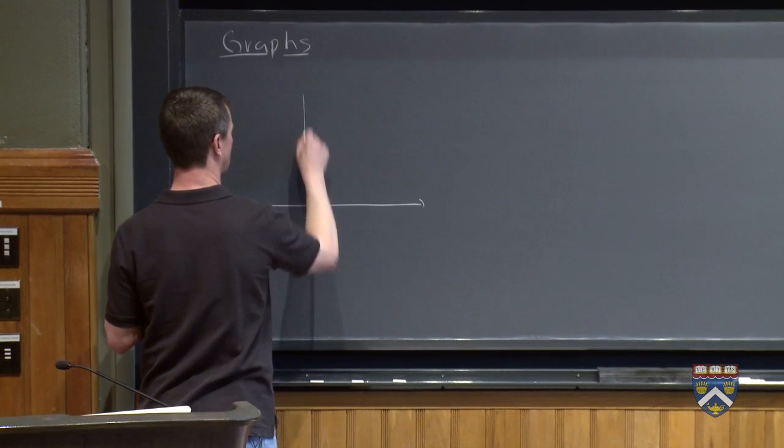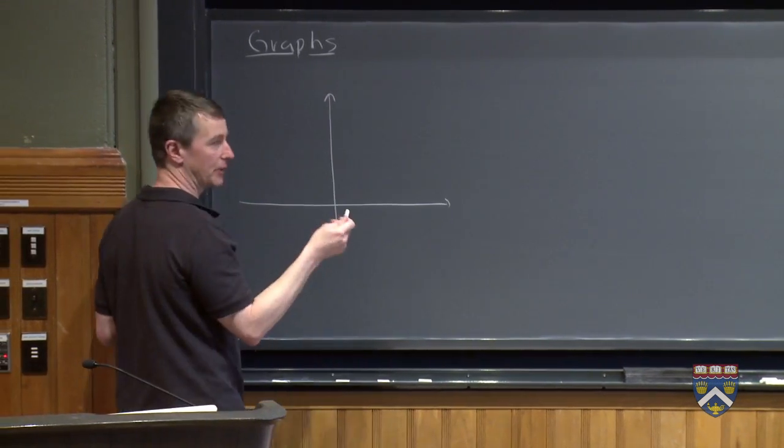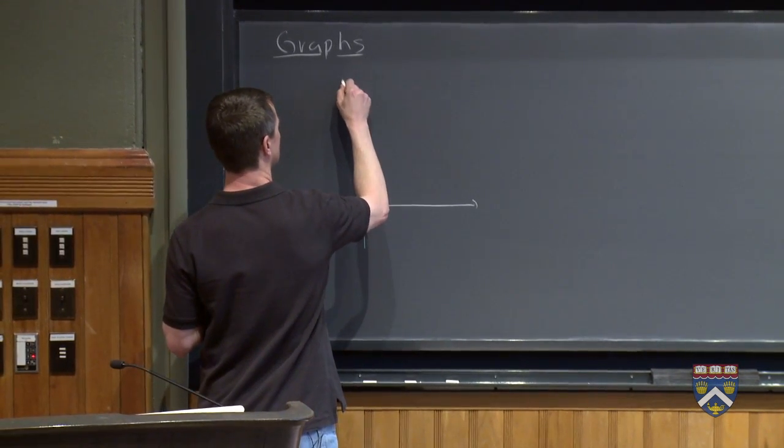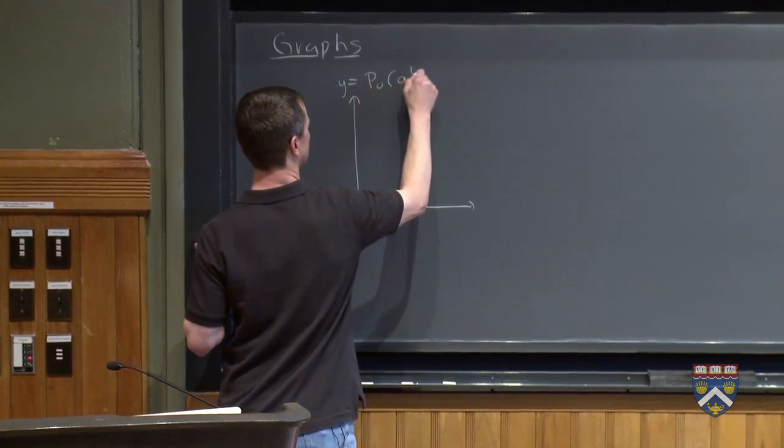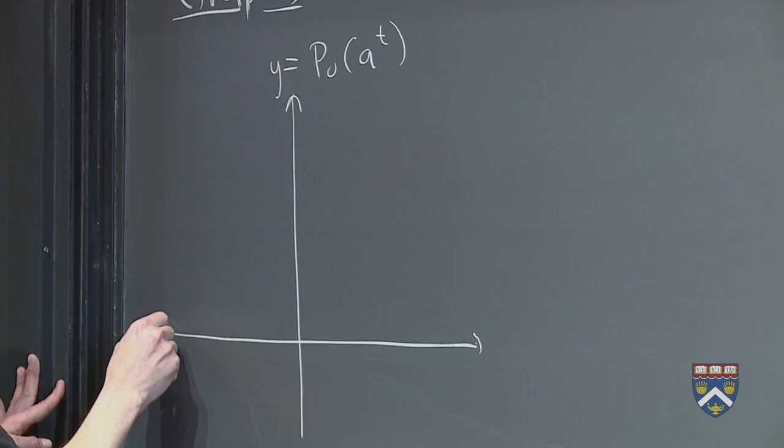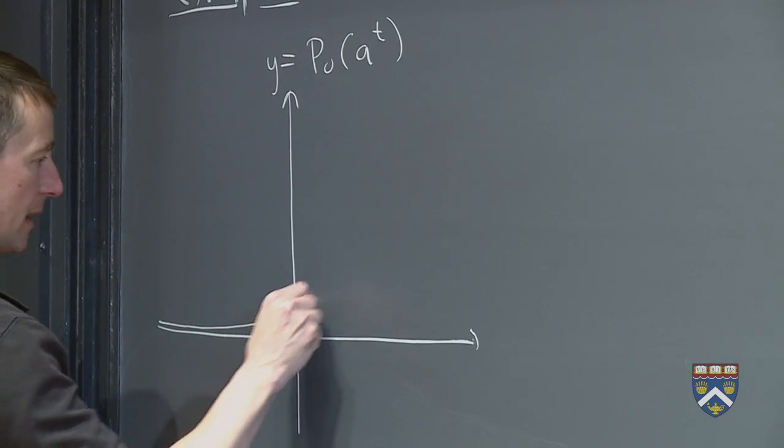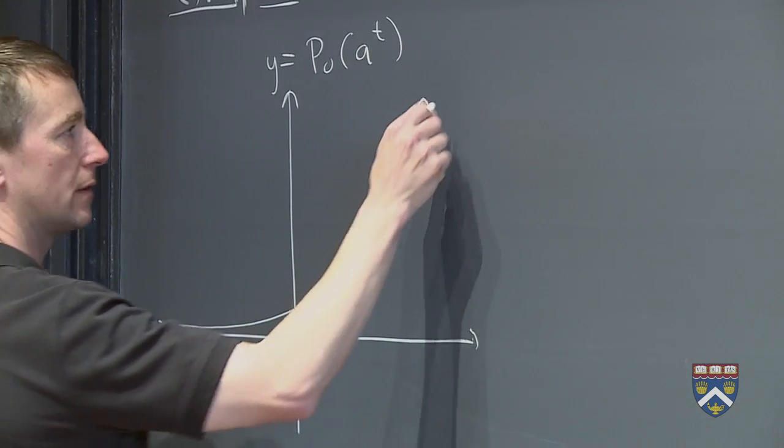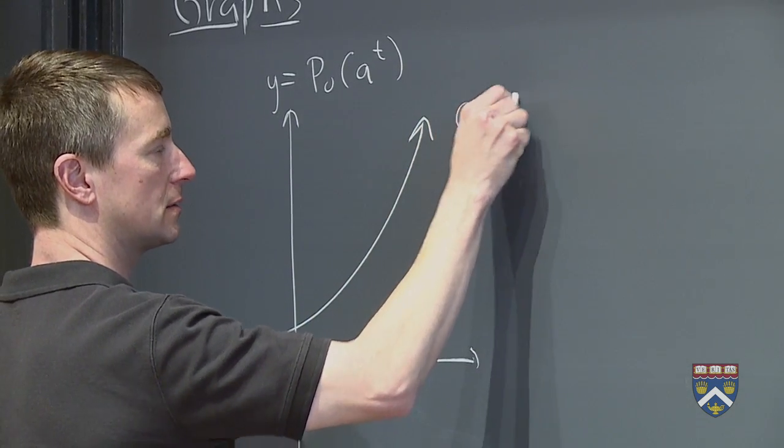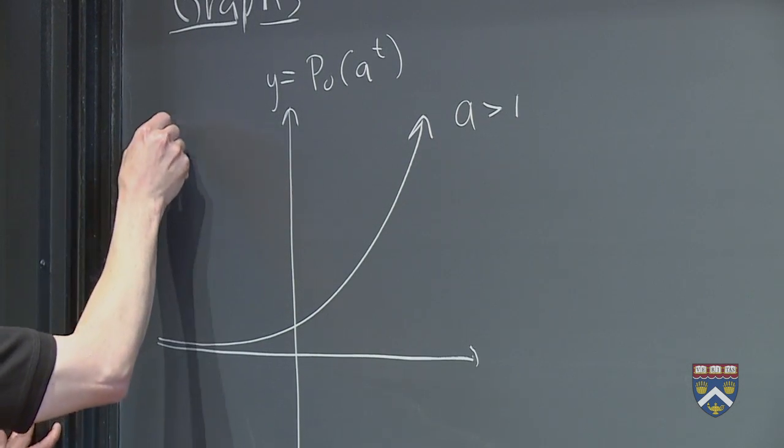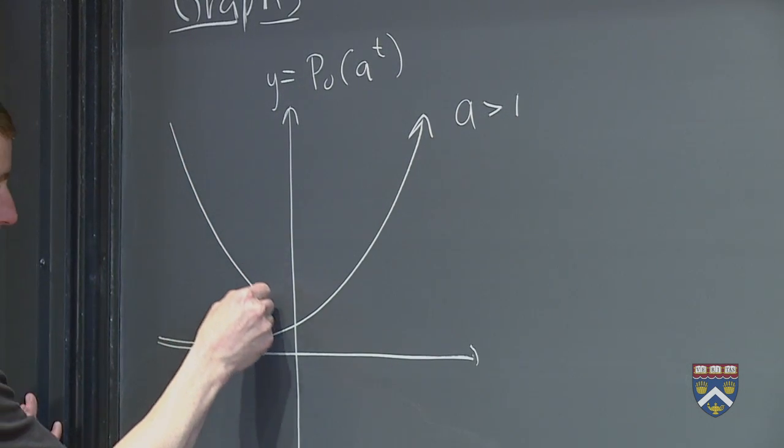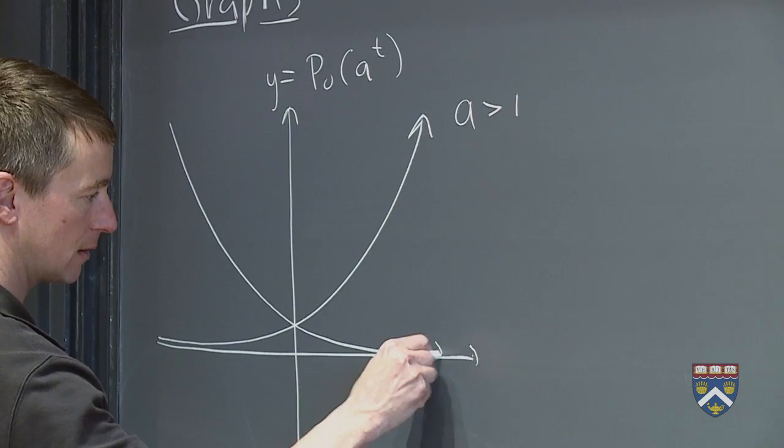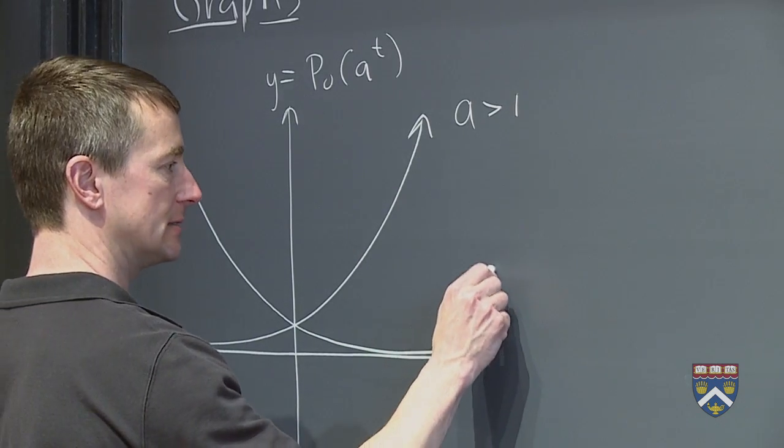What you should have discovered is that as long as the value of p sub 0 is positive, so if we have p sub 0, a to the t, there's two main varieties. There's the type where we have exponential growth, that's when a is greater than 1, and the type where we have exponential decay, where a is less than 1.